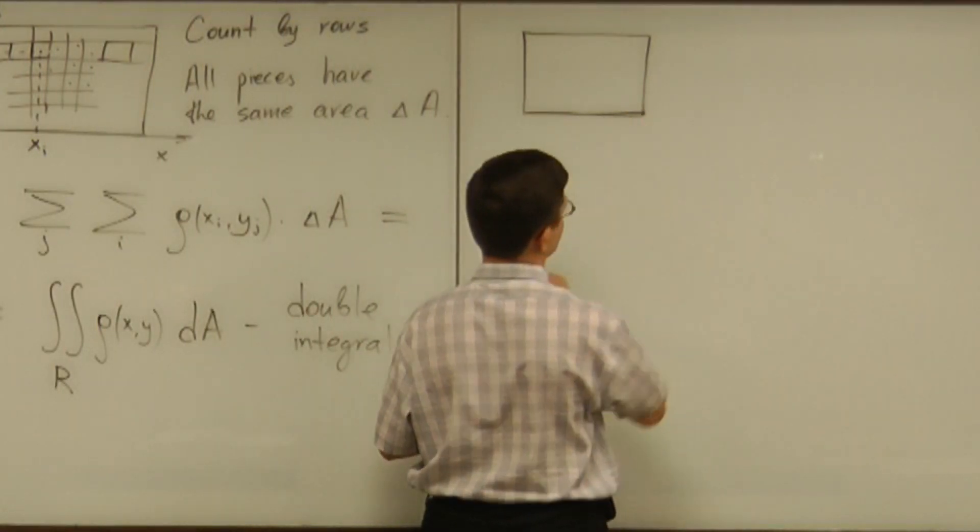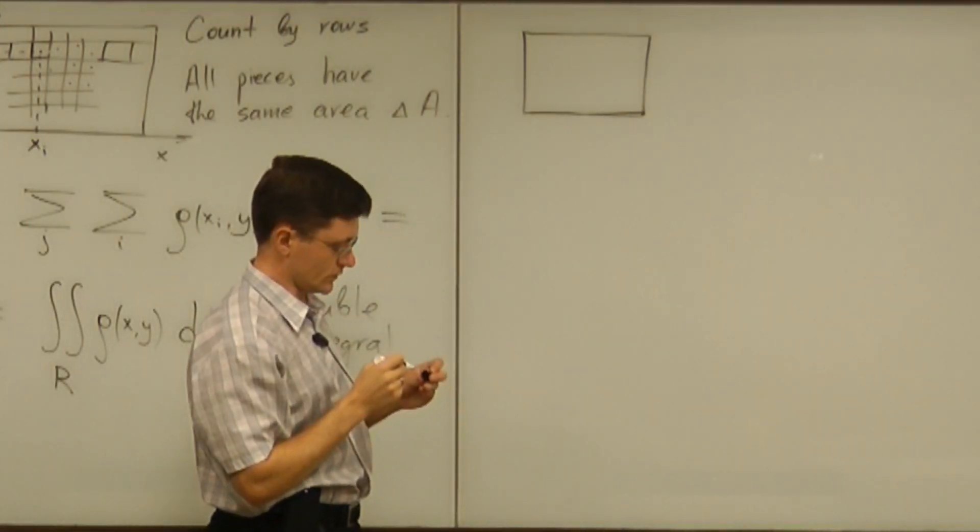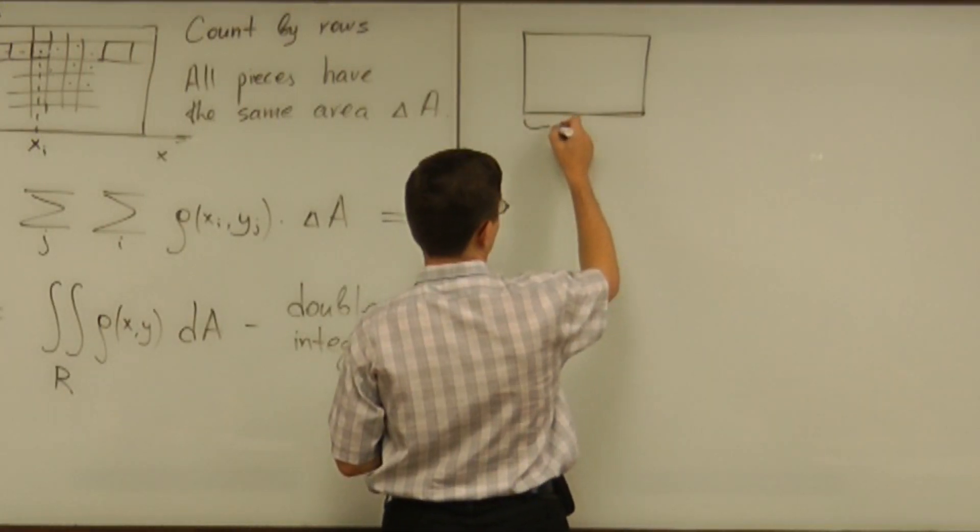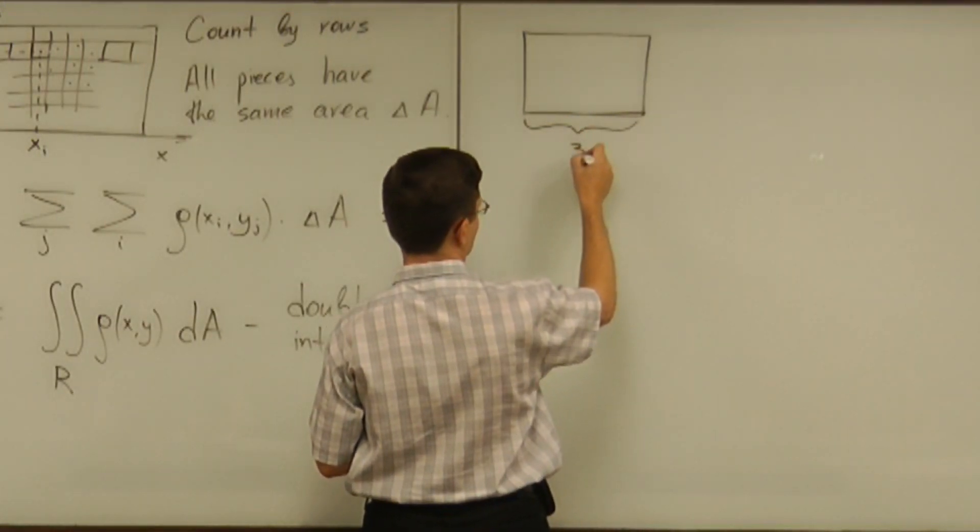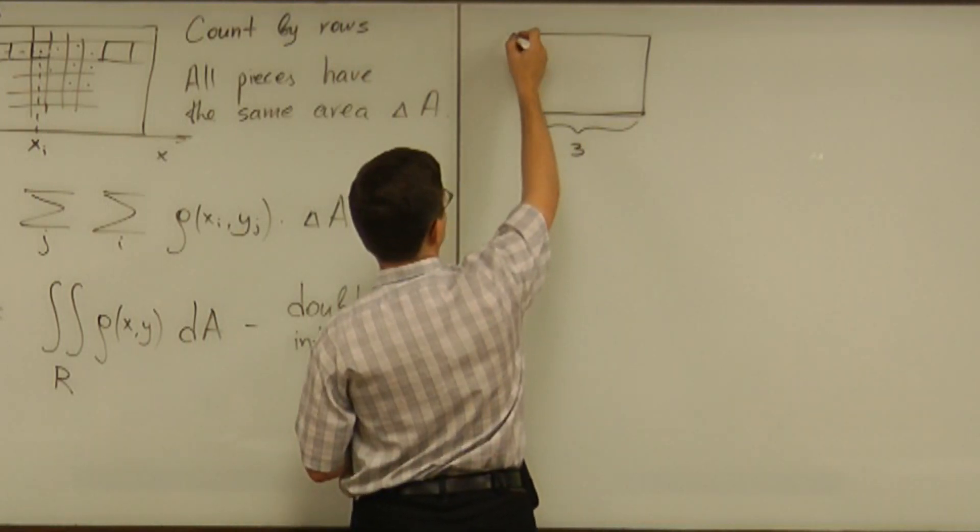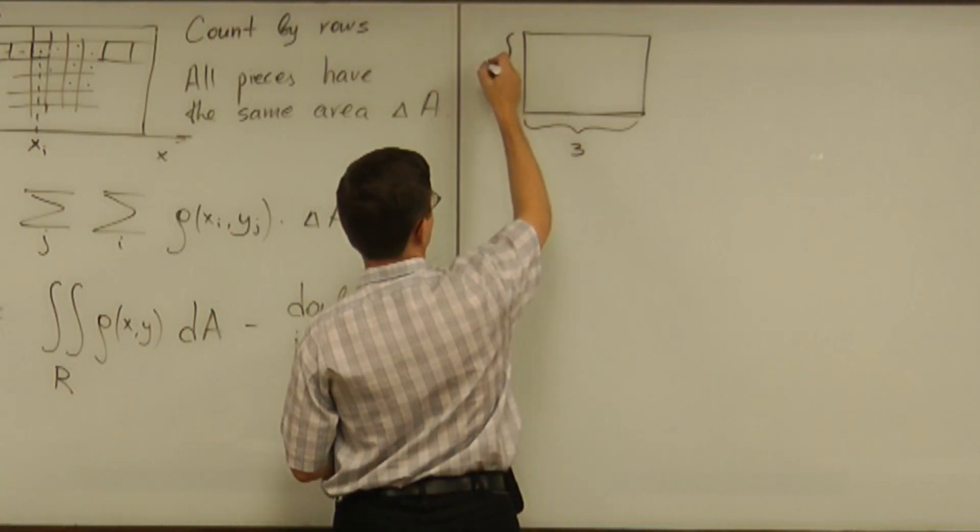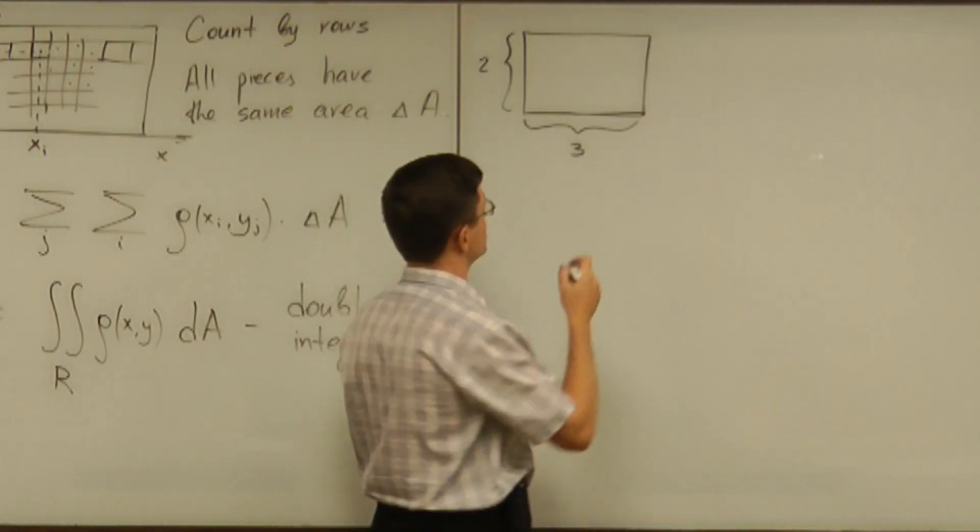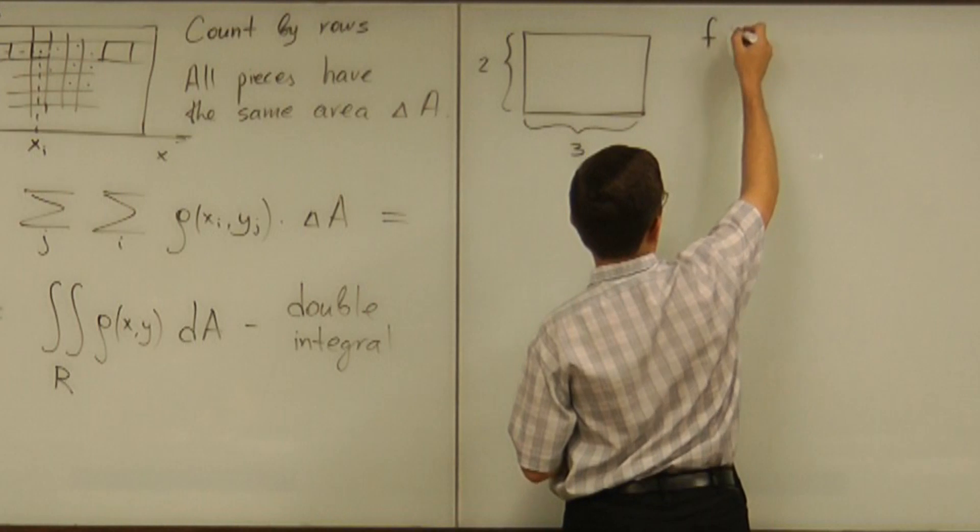The simplest case is the case of a rectangle. The typical problem is going to be given the rectangle, and I will give you the sizes: 3 and 2. And a function should be given. Let's call it f.